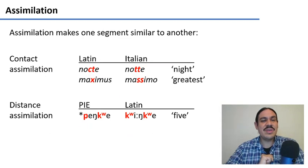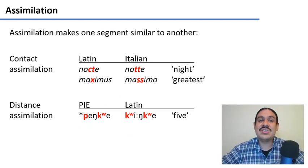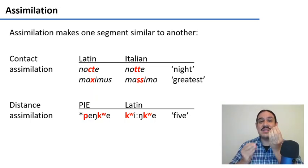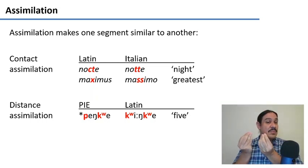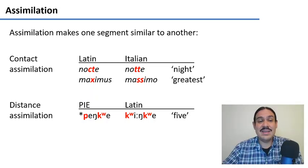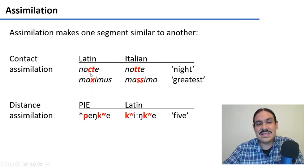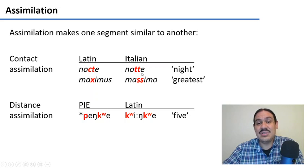Let's start with assimilation. Assimilation is a process where one segment can become more similar to another. Maybe they can just become the other one, like in Italian 'nocte' becoming 'notte', where you had a K and a T, and then this K changes into another T — 'notte'. So this T influenced the neighboring K into becoming another T.